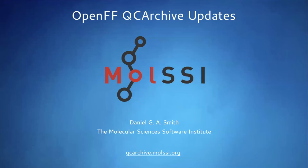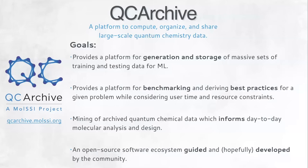I want to give a little bit of updates of what the QC Archive team has been up to in the past six months — specific updates with Open Force Fields and some general infrastructure updates as well. Going back over the goals of the QC Archive project: fundamentally, we are a platform for generation and storage of massive sets of training data, or general computations for machine learning or benchmarking. It's always about organizing and storing quantum data at scale, making sure all the relations are there so we can always find adjacent quantum data, and then displaying quantum data in a way that is simple and easy to use.